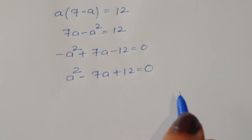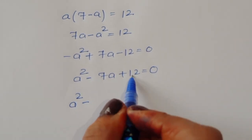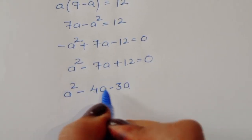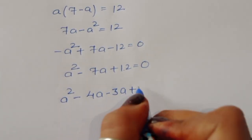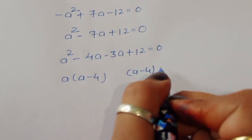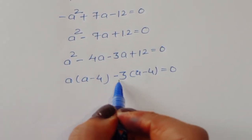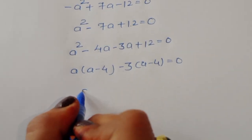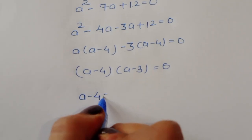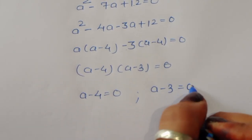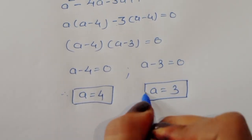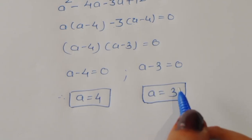Factoring a² − 7a + 12 = 0: we split −7a as −4a − 3a. So we get a(a − 4) − 3(a − 4) = 0, giving (a − 4)(a − 3) = 0. Therefore a₁ = 4 and a₂ = 3.